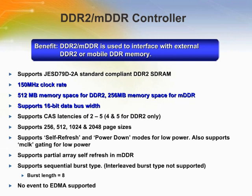The DDR2/MDDR controller is one of two memory interfaces on the AM18X device. It is used to interface with DDR2 and MDDR SDRAM devices. The CPU, EDMA, and other master peripherals use the DDR2/MDDR controller to access data and instructions in external memory. The DDR2/MDDR controller can interface with up to 512 megabytes of double data rate SDRAM over a 32-bit bus. Configurable CAS latencies and memory timings allow the DDR2/MDDR controller to support a wide range of DDR SDRAM devices.